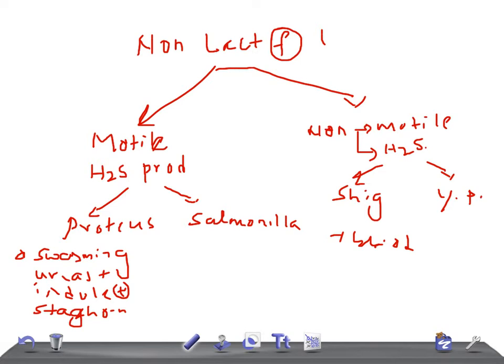Yersinia pestis has a very important characteristic: the safety pin appearance. It causes bubonic plague and pneumonic plague, both very important. It is spread by flea bites from wild rodents. It is coagulase positive and has two antigens: V and W antigens.